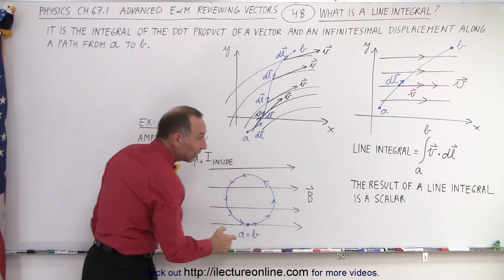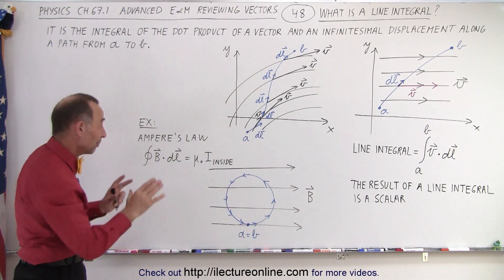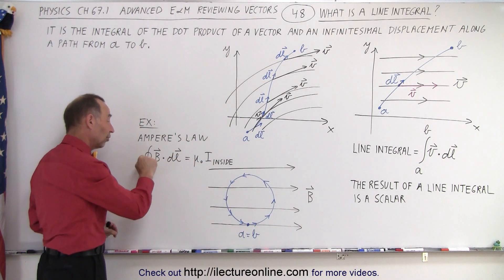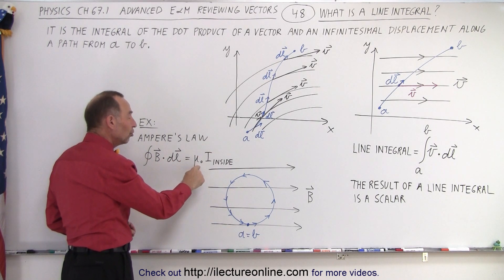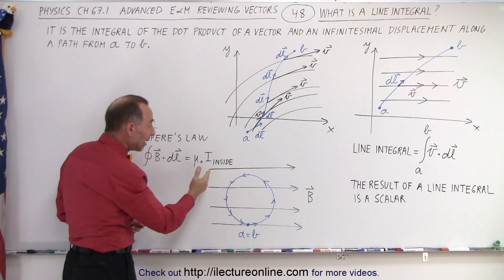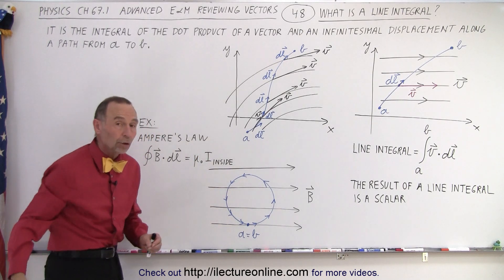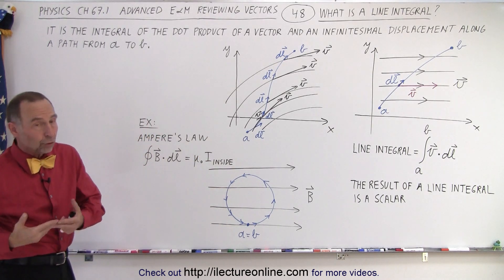It doesn't have to be, but in this case for Ampere's law we need to go all the way around the circle. And when you do that and you add them all up, you get mu sub naught, which is a constant, times the current inside the loop.